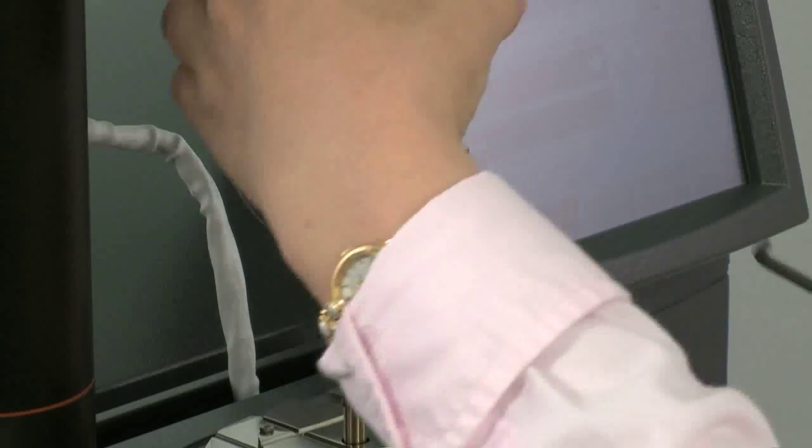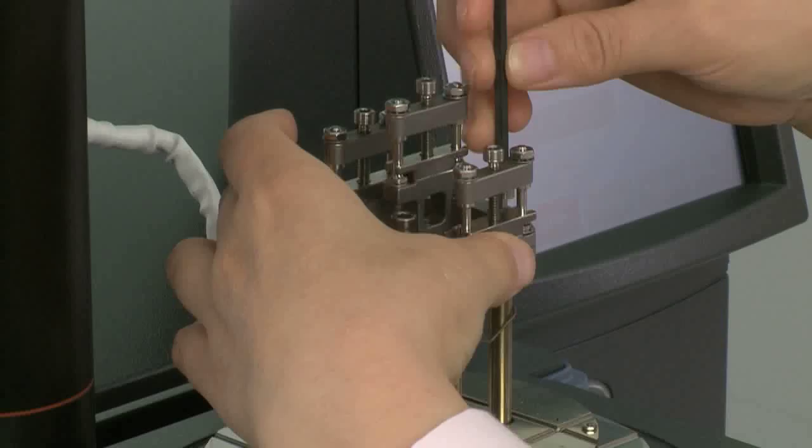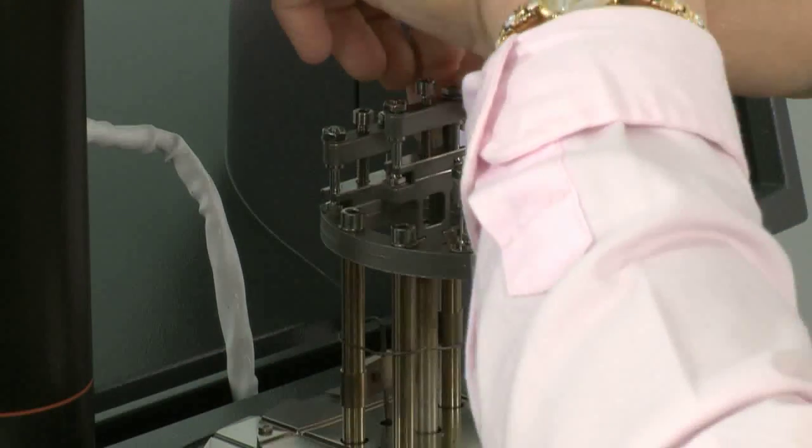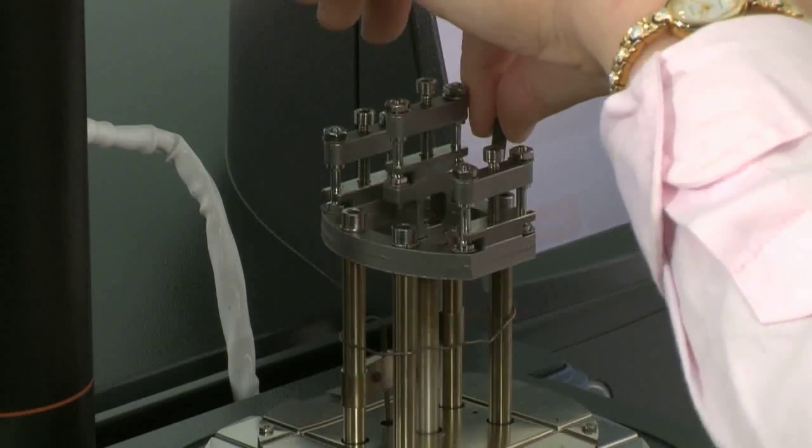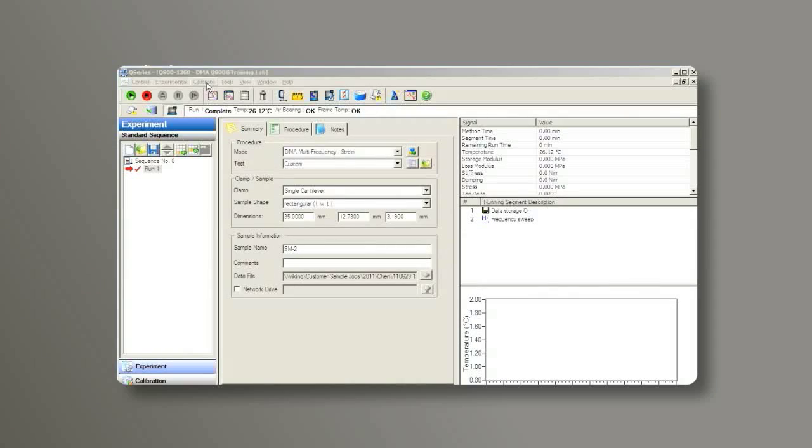Then install the stationary clamp. Tighten all the screws with the allen key that's provided in your clamp kit. Make sure not to bend the thermocouple.